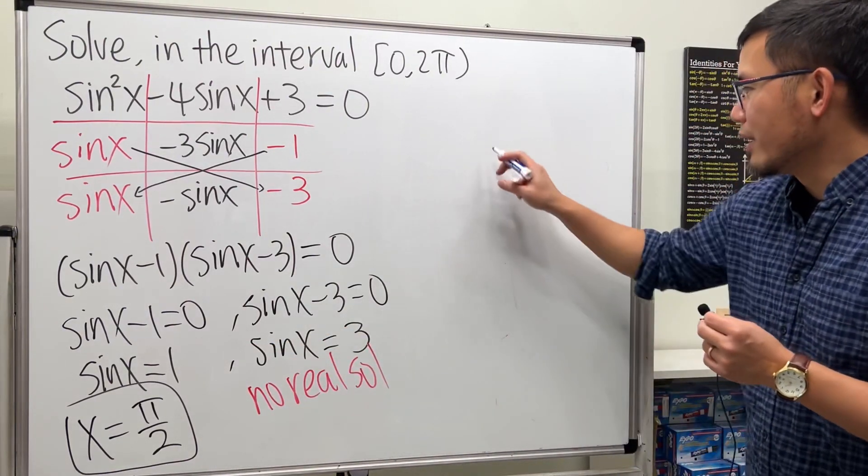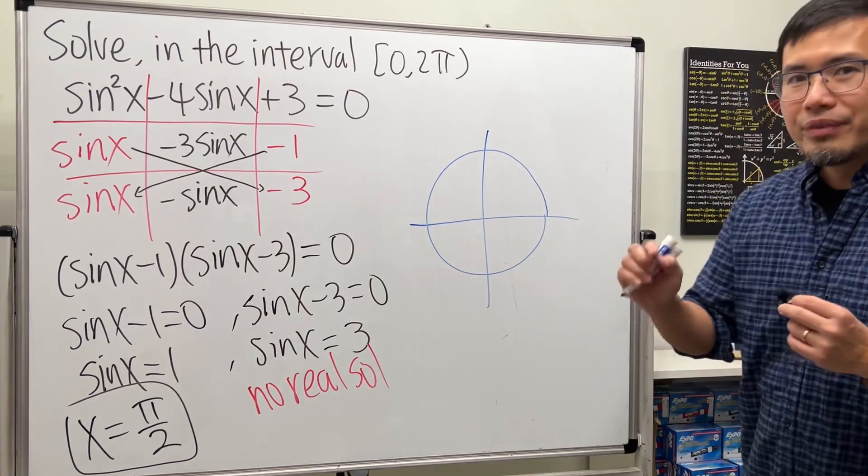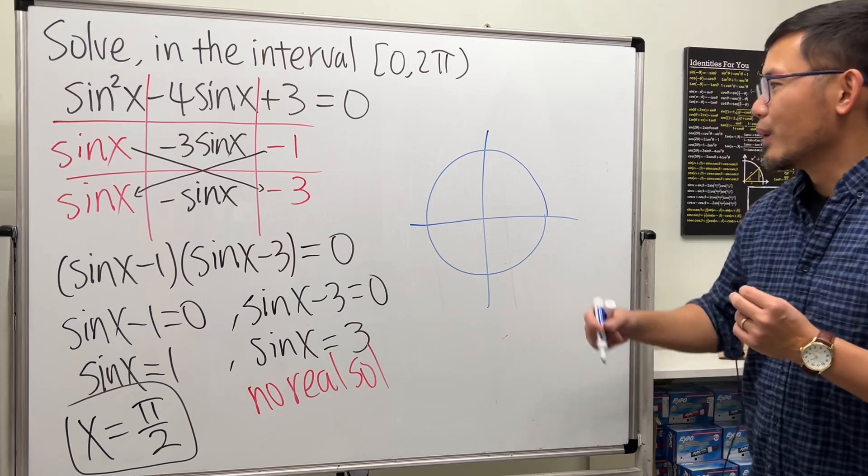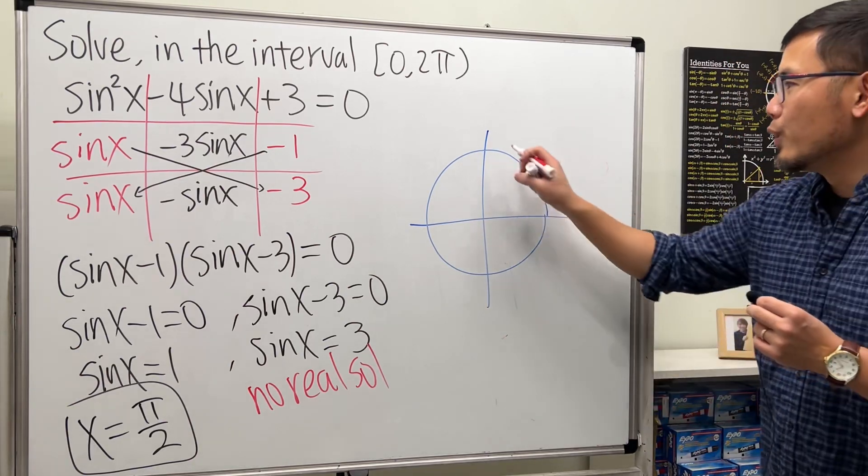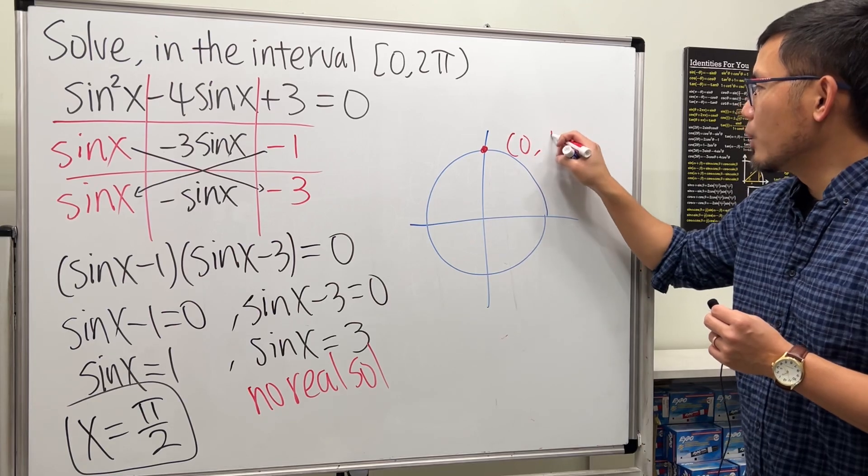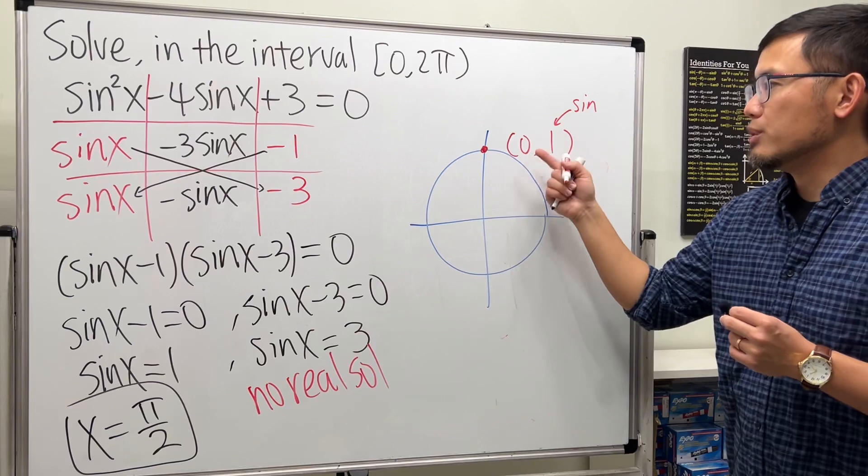We are looking for sine x equals 1. So on the unit circle like this, sine is the y value on the unit circle. Where is the y value equal to 1? Right here. This coordinate is 0,1, and this gives you the sine value. The cosine value here will be 0.